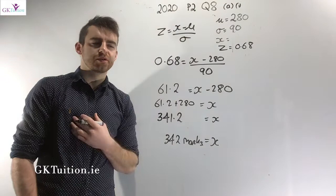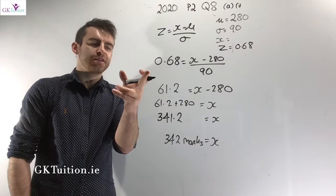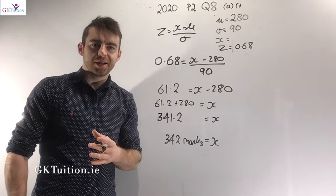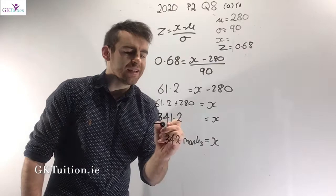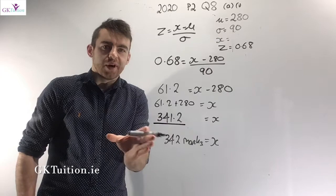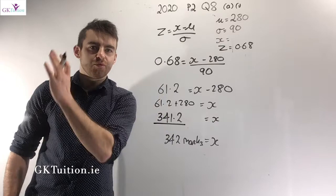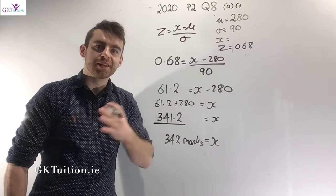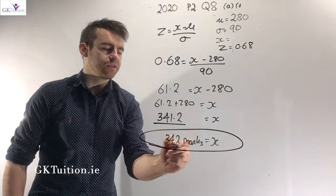Multiplying both sides by 90 to eliminate the fraction: 0.68 × 90 = 61.2. Adding 280 to both sides gives x = 341.2. To be in the top 25% you need at least 341.2 marks. Since we must round up — rounding down would put someone below the top 25% — the final answer is x = 342 marks.